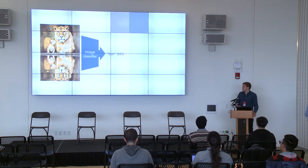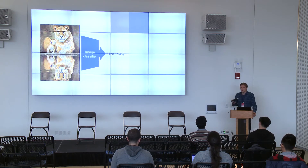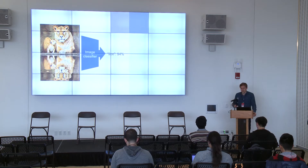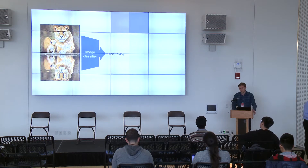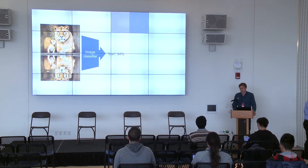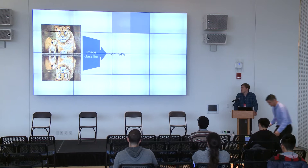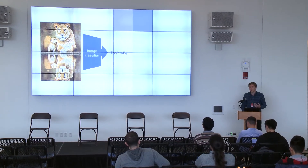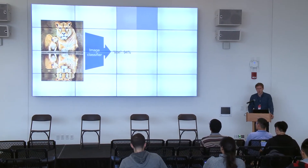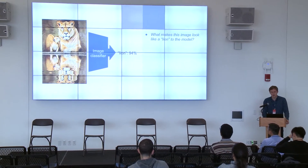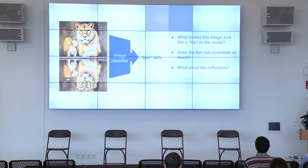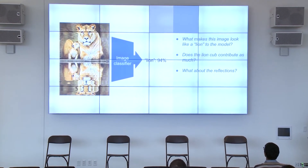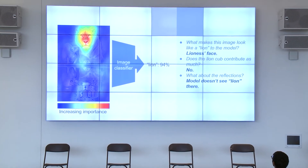A lot of times, working with neural nets, we end up wondering why do they do what they do and what are the reasons for their predictions. For example, you can see an image that is classified by some neural net image classification model as a lion with high confidence. And you may be wondering what makes this image look like a lion to the model. Is it just the adult lioness, or does the cap contribute as much? What about the reflections? Do they affect the model's prediction? This type of question can be answered by looking at the saliency maps.